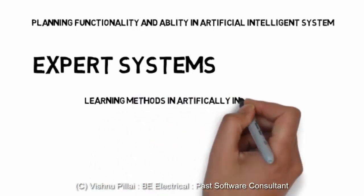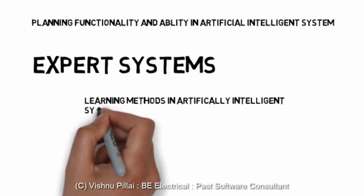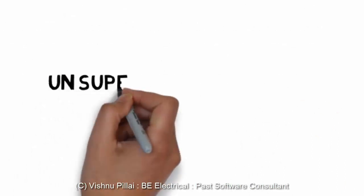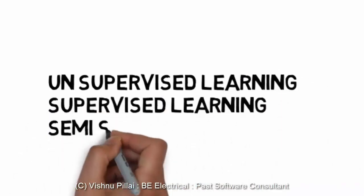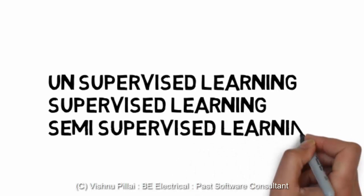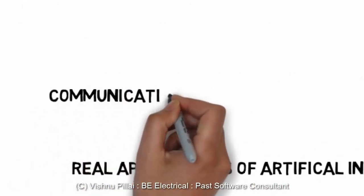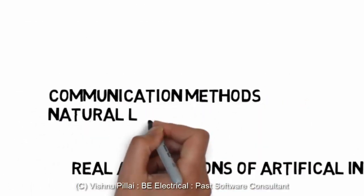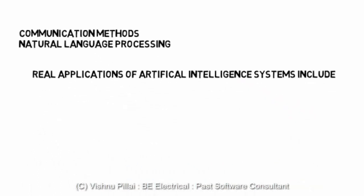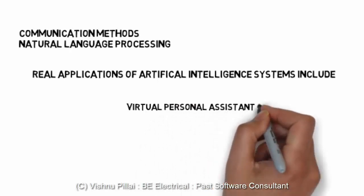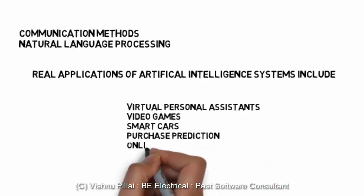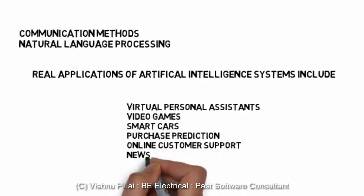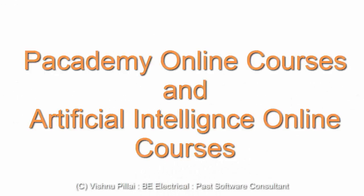Another ability an artificial intelligence system should have is the ability to plan. When given multiple tasks, the system should be able to choose which task to do and in what order. Additionally, systems capable of self-learning can learn in a supervised, unsupervised, or semi-supervised way. The system should also be able to communicate with the user — such input and output communication can be achieved using natural language processing.